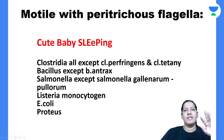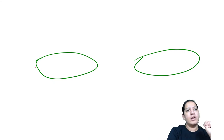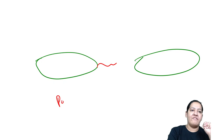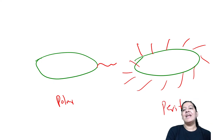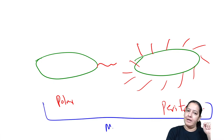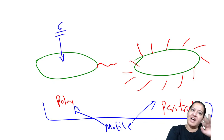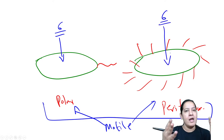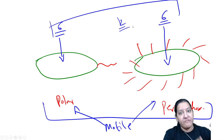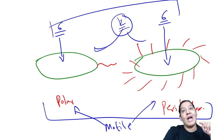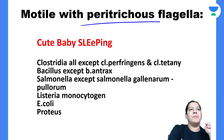For motility: two types of flagella exist. Polar flagella are present at one pole of the bacteria. Peritricus flagella are present all around the bacteria. There are 6 bacteria motile by polar flagella and 6 motile by peritricus flagella — total 12 motile bacteria. MCQs are specific about which type of flagella, so you need separate mnemonics for each.